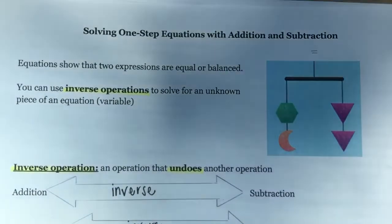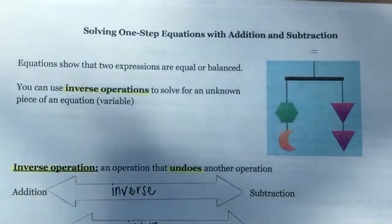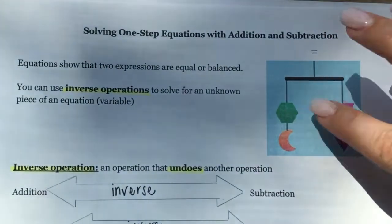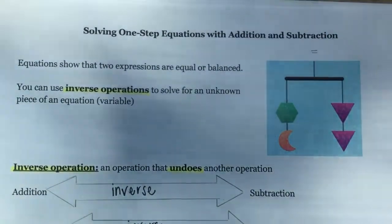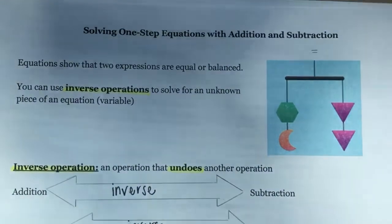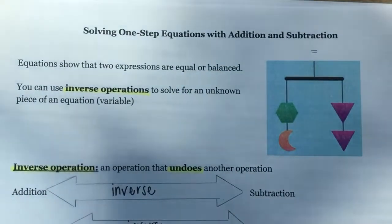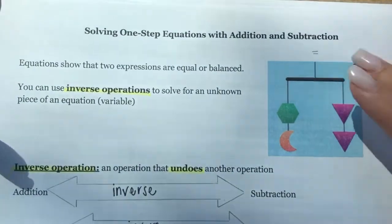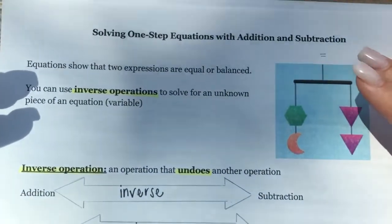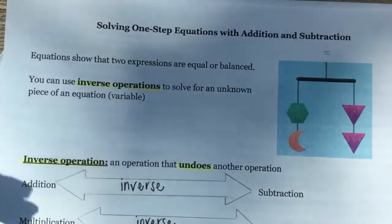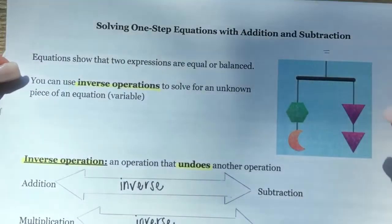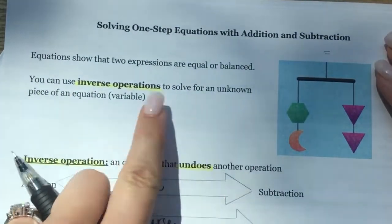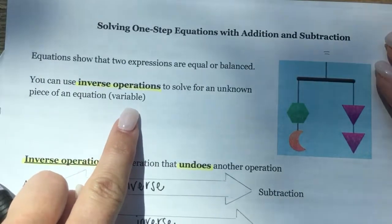Usually in an equation you have an unknown piece of information. With the puzzles we had different shapes we didn't know, but in algebra we have unknown variables like X, Y, or A. In order to solve for those variables and find their value, we can use something called inverse operations to solve for an unknown variable in an equation.